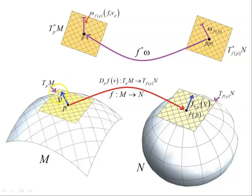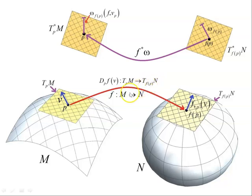What we're going to do is push this vector V forward using the Jacobian matrix D evaluated at the point P, acting on F, acting on the vector V. So it pushes the vector V forward to this vector here, and we denote the push-forward as F lower asterisk at the point P of V. This map is a map from the tangent space to the manifold M at the point P to the tangent space to the manifold N at the point F of P, under this map F. This is the Jacobian matrix evaluated at the point P.